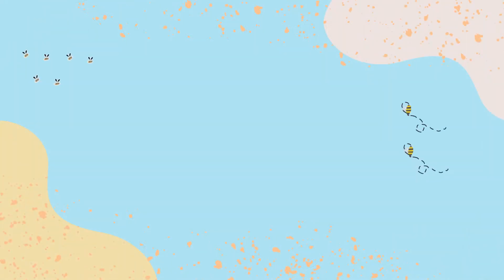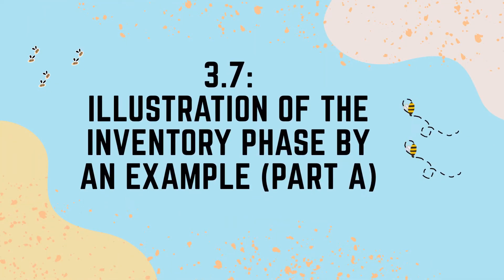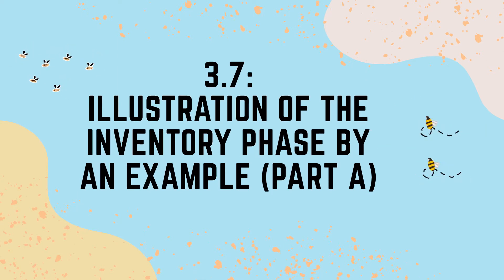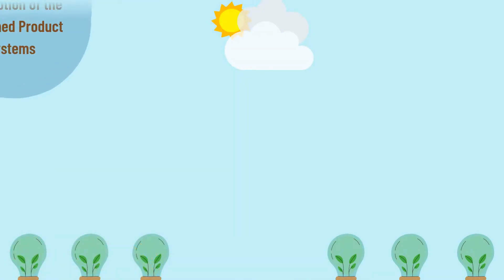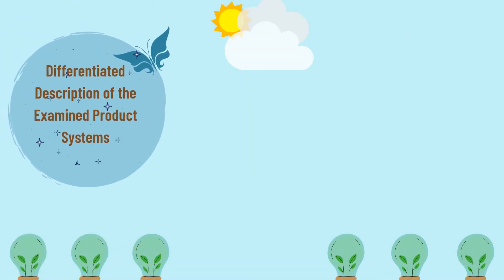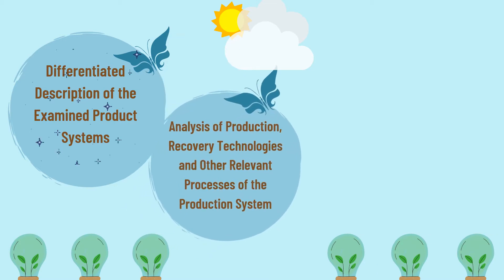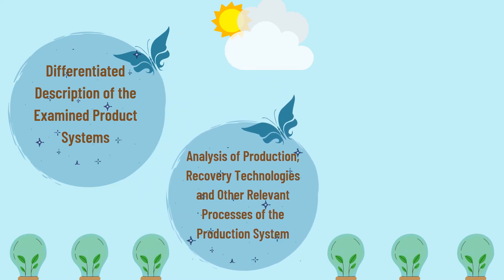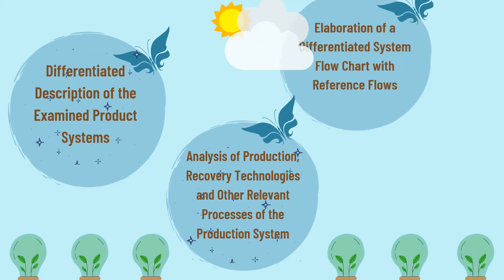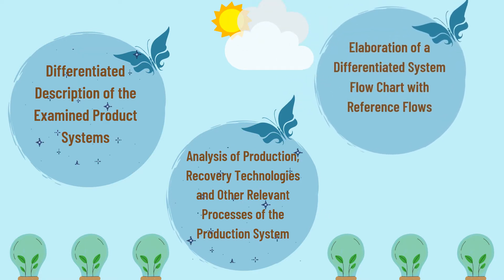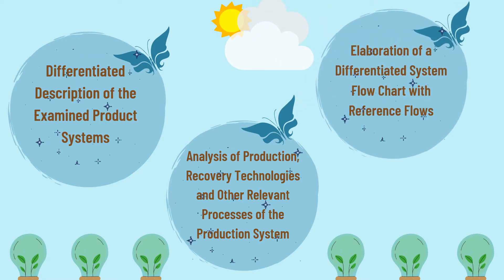The topic covered in this video is 3.7 Illustration of the Inventory Phase by an Example, Part A. The subtopics in this video consist of: differentiated description of the examined product systems, analysis of production, recovery technologies and other relevant processes of the production system, and elaboration of a differentiated system flowchart with reference flows.